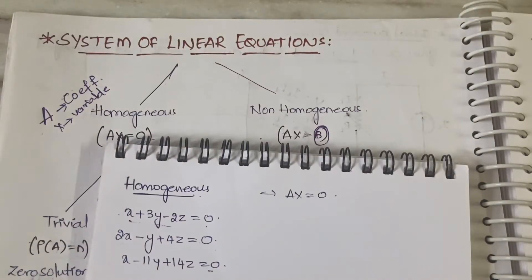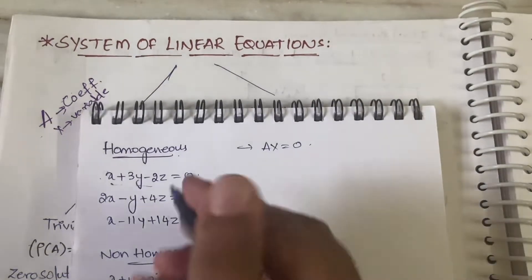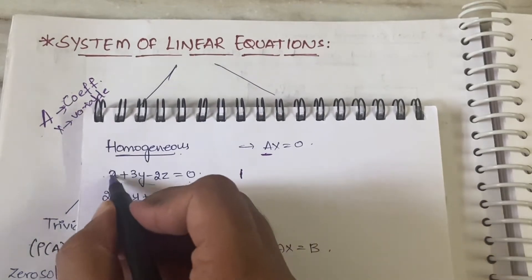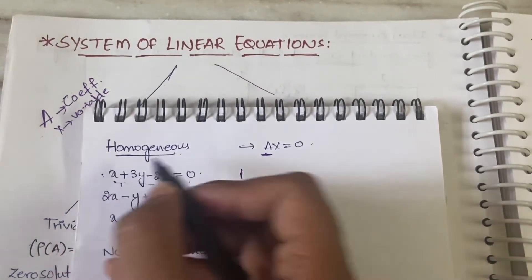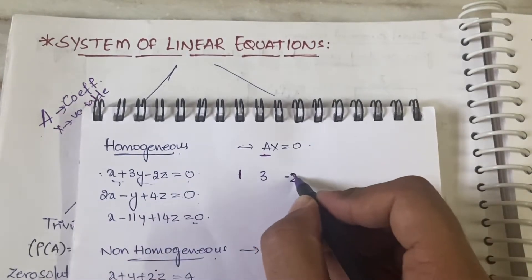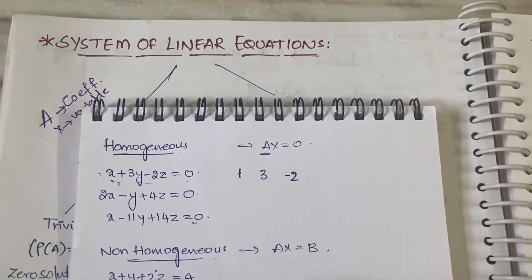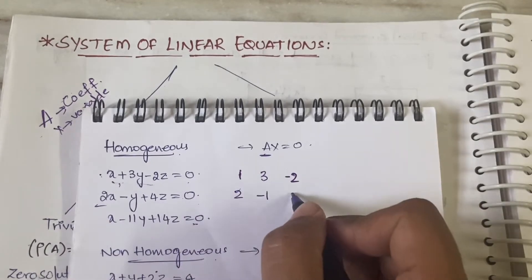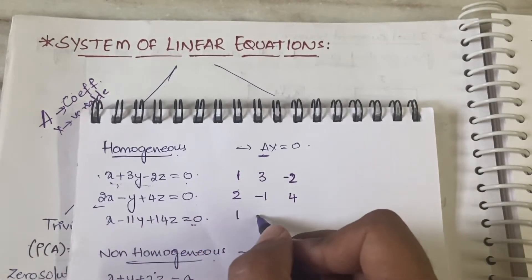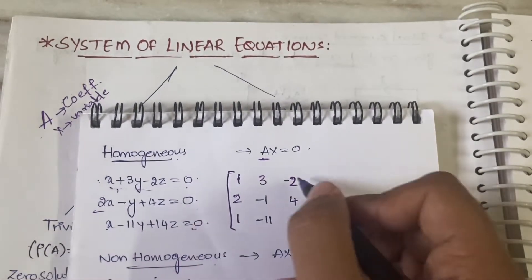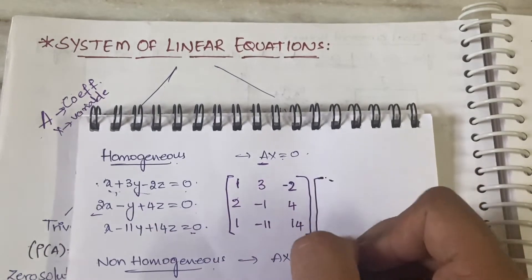To write a matrix it is very simple. First you need to write the coefficient matrix A. The coefficient matrix contains the coefficient of x, coefficient of y, and coefficient of z, along with their symbols — taking symbols is very important, always be careful about that. For example: 2, -1, 4, then 1, -1, 1, 1, 4.